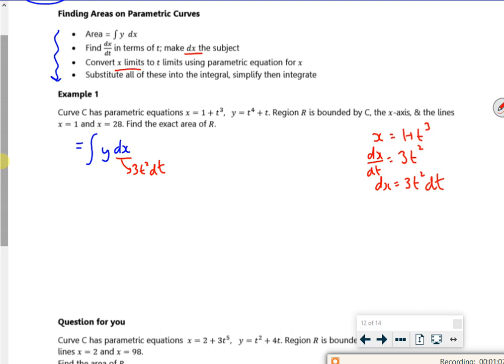It says convert the limits. So I'm doing x is 1, and I need to change it into t. So now I've got to look at the limits. So when x is 1, I've got 1 equals 1 plus t cubed. If I take away the 1 it's 0, cube root it, it's 0.